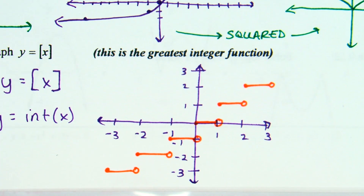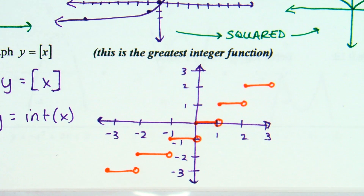They all have a length of 1. Why is this a function? It passes the vertical line test, because even though those endpoints overlap, there's an open and a closed circle at the same x-value, so it passes and is a function.